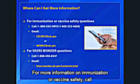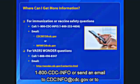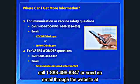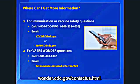For more information on immunization or vaccine safety, call 1-800-CDC-INFO or send an email to cdcinfo@cdc.gov or nipinfo@cdc.gov. For VAERS Wonder questions, call 1-888-496-8347 or send an email through the website at wonder.cdc.gov/contact-us.